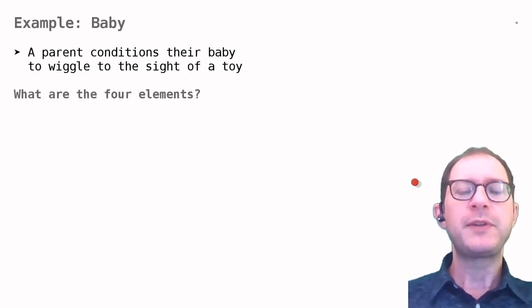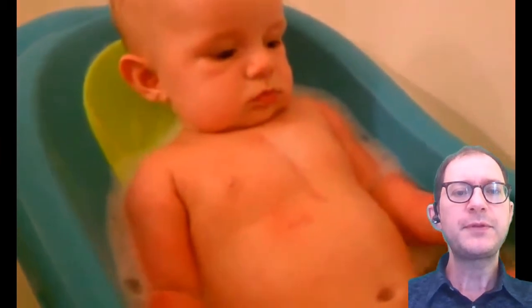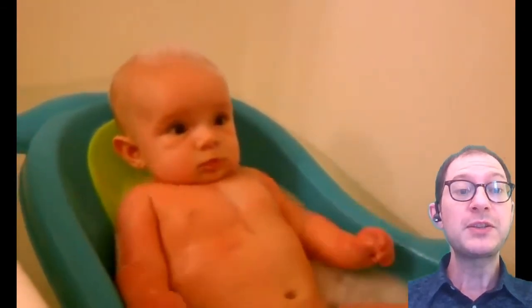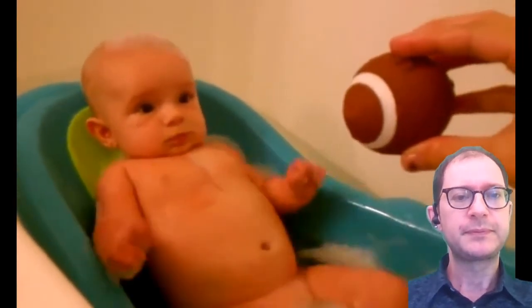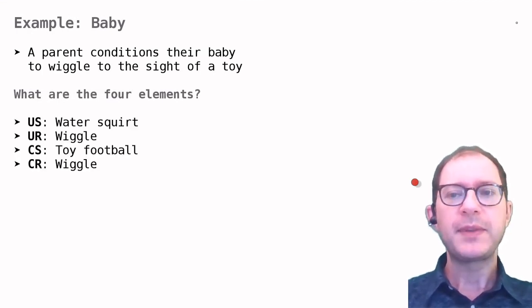Another way of appreciating why Pavlovian conditioning is interesting is to see it in action in humans. We will see plenty of applications to human health in future lessons. In this lesson, we start with a few simple examples. In this first example, we see a baby taking a bath. A parent squirts the baby with water using a toy football. The baby wiggles in response. After a couple of times, we will see that the baby starts wiggling already at the sight of the football. What are the elements of Pavlovian conditioning here? The US is the water squirt, and the UR is wiggling. The CS is the sight of the toy football, and the CR is again wiggling.